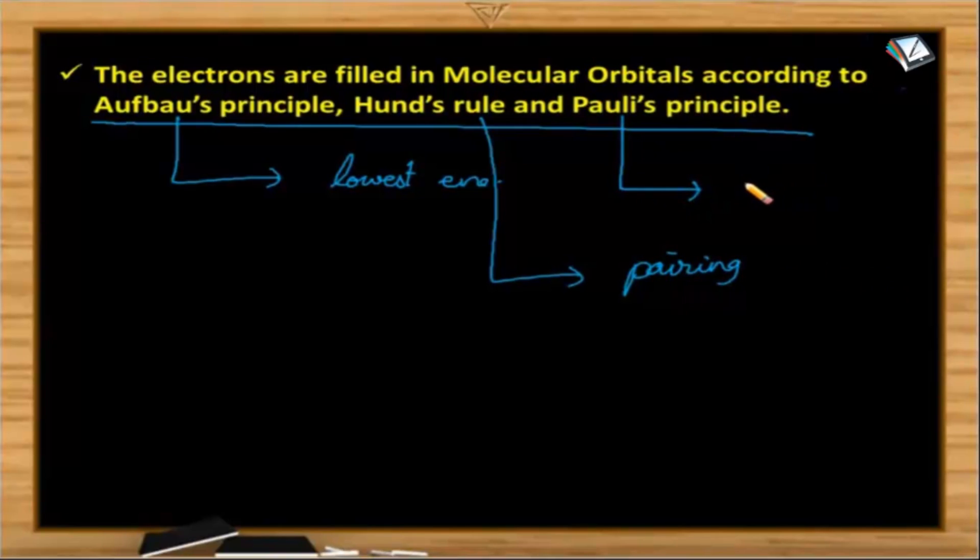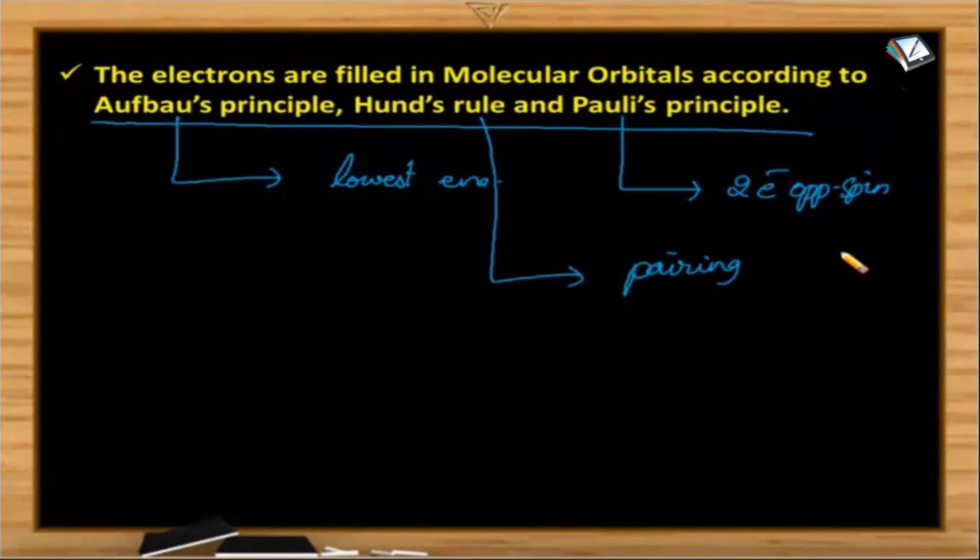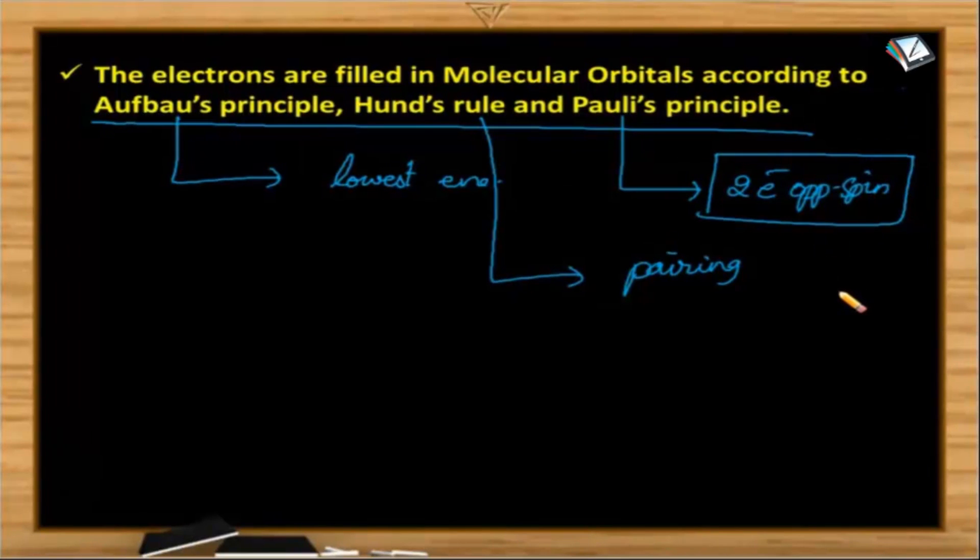Then what is Pauli's exclusion principle? Any orbital can accommodate maximum of two electrons and that too with opposite spin. Or in another way no two electrons can have the same set of all four quantum numbers and that from there we can conclude that any orbital can accommodate a maximum of two electrons with opposite spin.